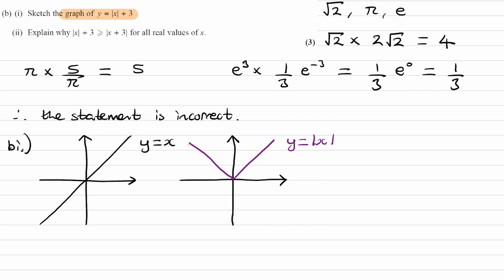Each half of the modulus function has an equation. The right-hand side is the same line as before — y equals x. The left-hand side is y equals minus x. The basic idea is that for the reflected line, it's the same equation as the original but the right-hand side is multiplied by minus 1. So the equation for what gets reflected above the x-axis is y equals minus x. That's y equals modulus of x.